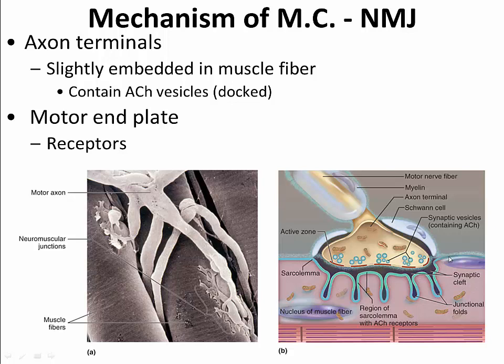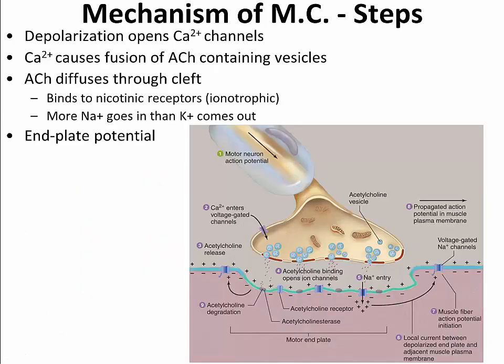The region of the sarcolemma found directly underneath the axon terminal is referred to as the motor end plate. The motor end plate is the portion of the sarcolemma that contains a high concentration of nicotinic receptors — receptors for acetylcholine — which is released from the synaptic vesicles. With the anatomy in mind, we move on to the physiology of what happens at the neuromuscular junction.